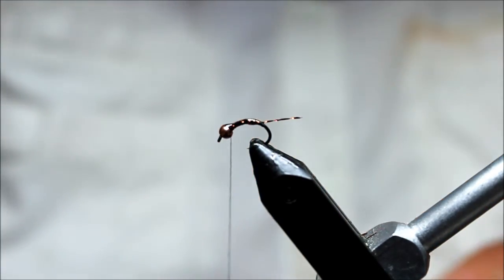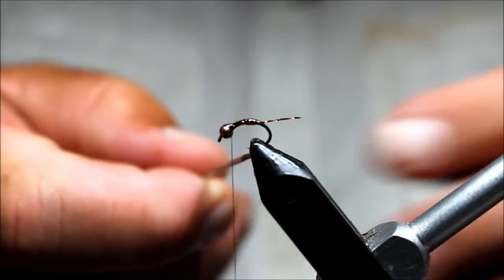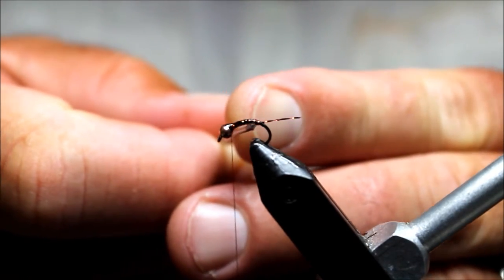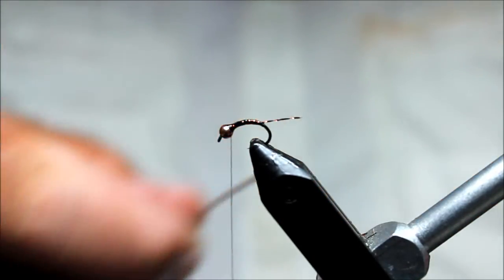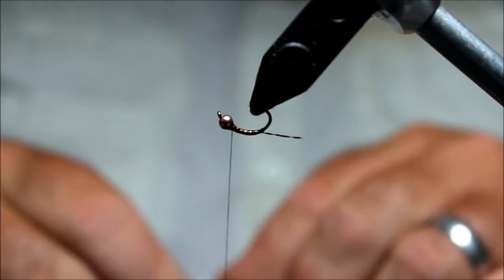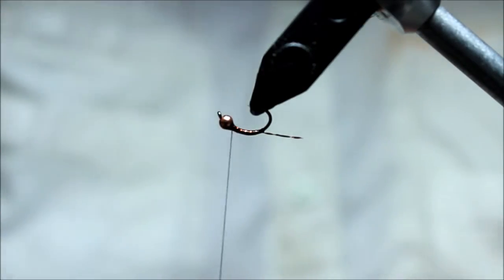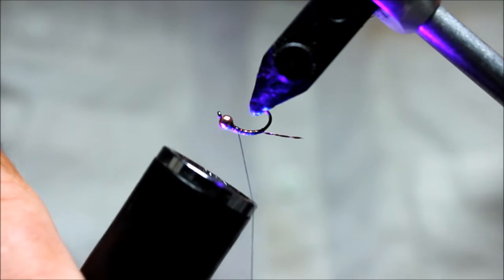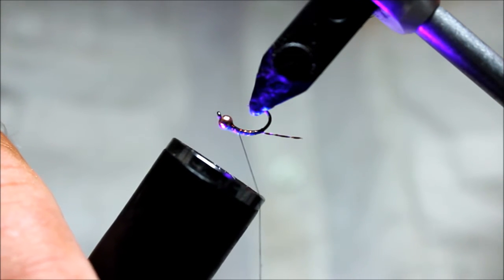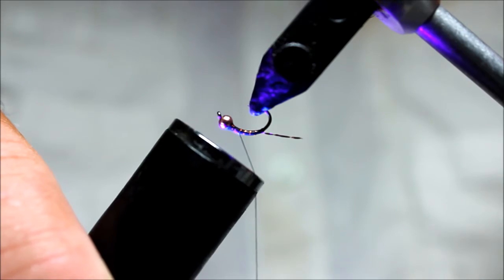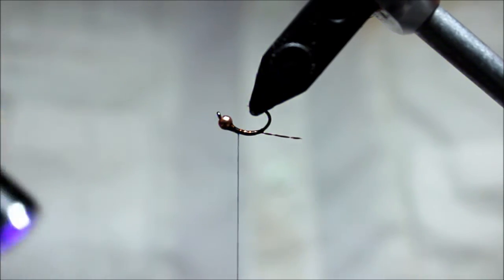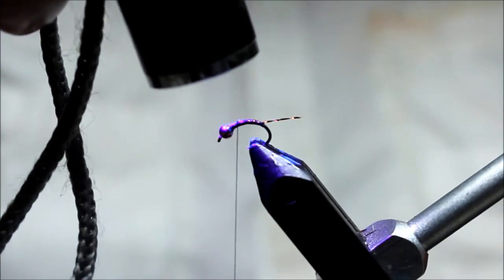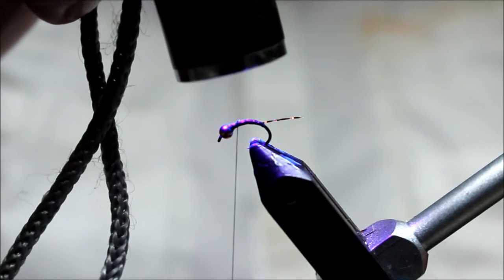And I'm gonna flip it upside down because if it's going to pool up anywhere, I want that to be on the back of the fly. If you don't have UV cure, no big deal—just throw on some Sally Hansen's or some sort of clear nail polish.